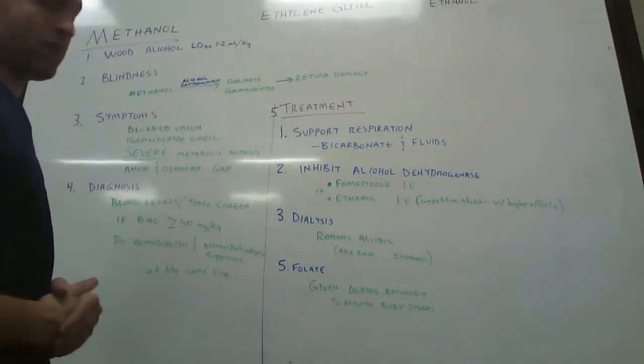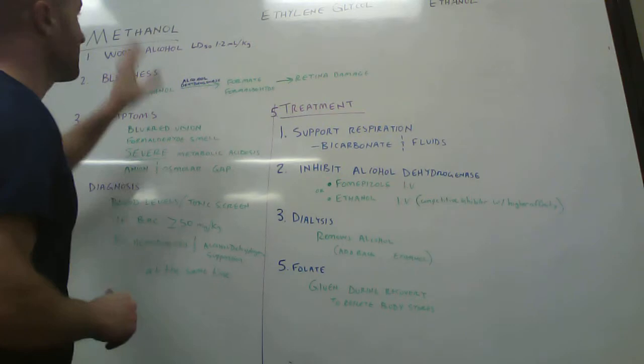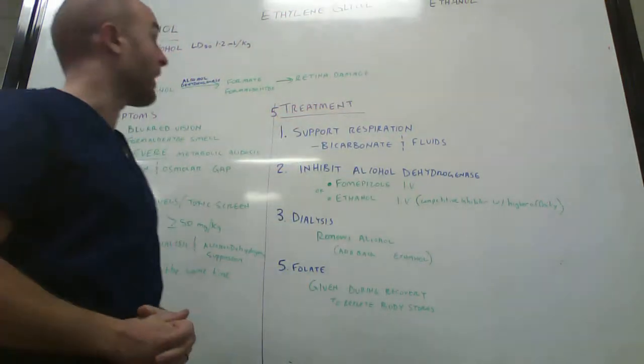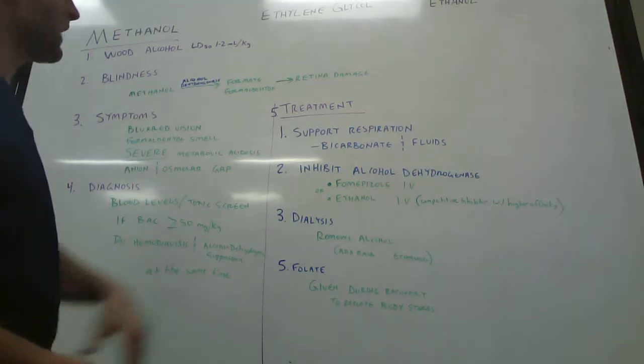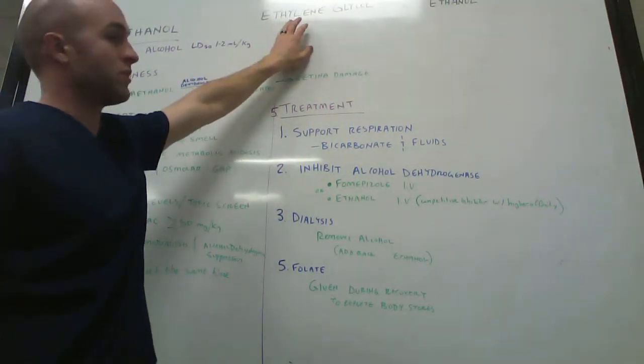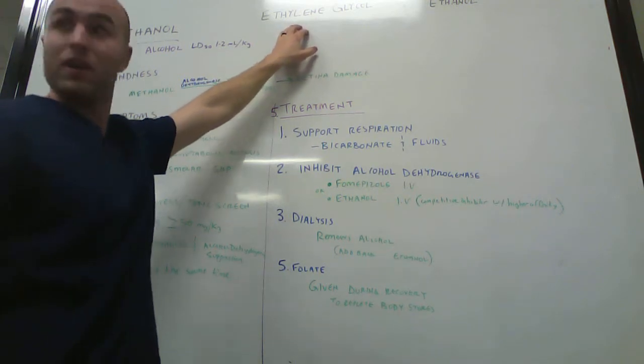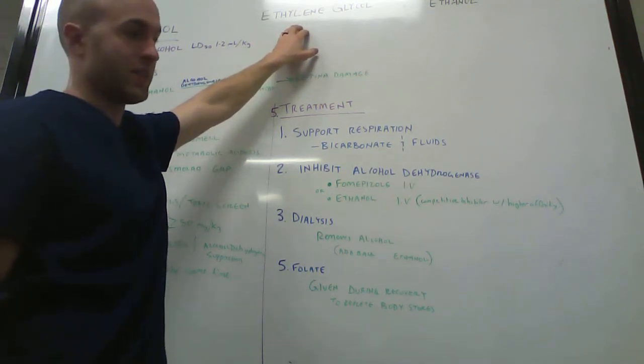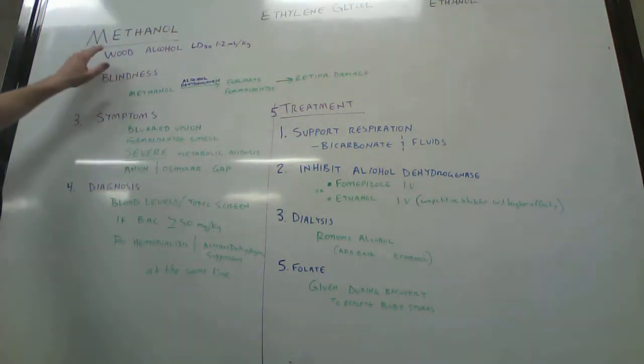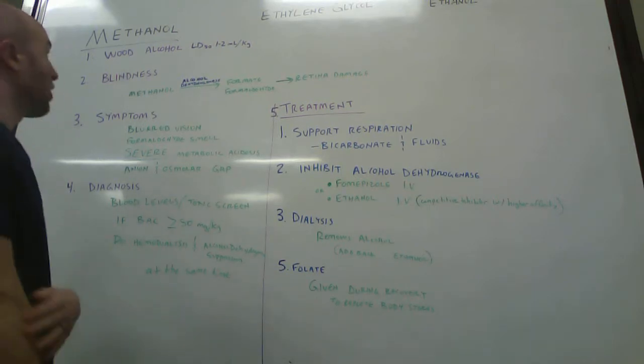There are three kinds of alcohol mentioned in this lecture. There's methanol, ethylene glycol, and ethanol. Ethanol is typically the one that you would drink. Ethylene glycol goes in your car to act as a coolant, and methanol is typically referred to as wood alcohol.